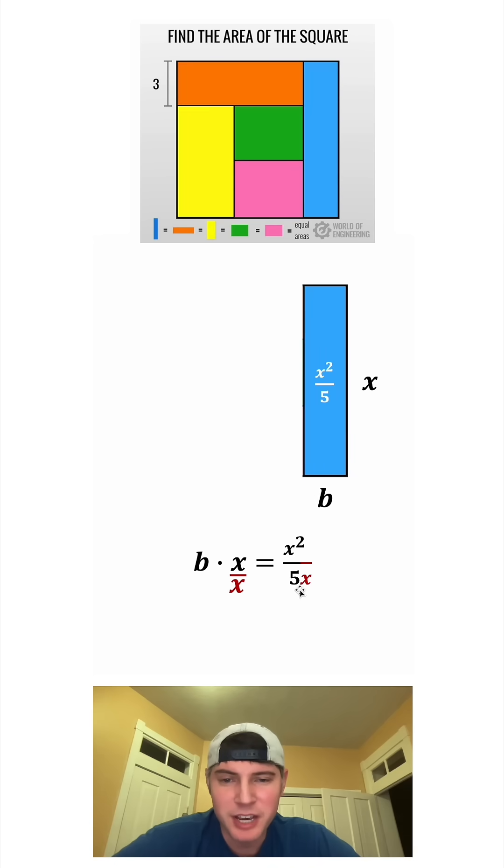And I want to know what is b in terms of x. So let's divide both sides of the equation by x. On the left-hand side, these will cancel, so we just have b. And on the right-hand side, you can think of x squared as x times x. And then one of these x's will cancel from top and bottom. So that means b is equal to x over 5, or one-fifth x.